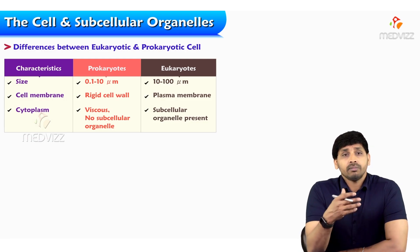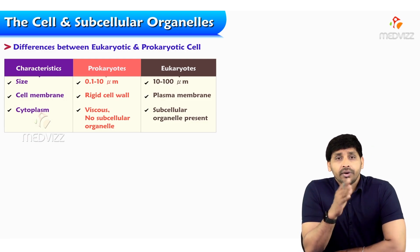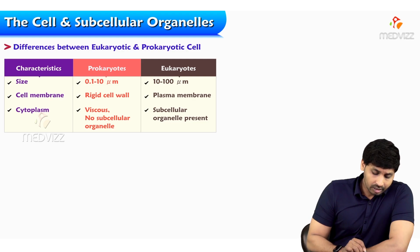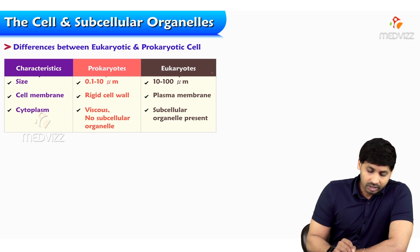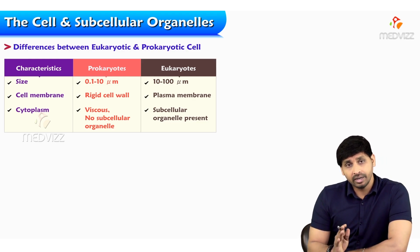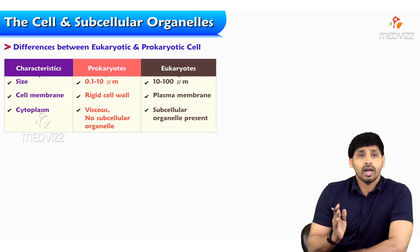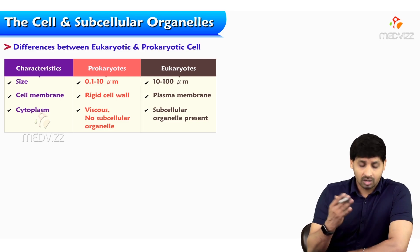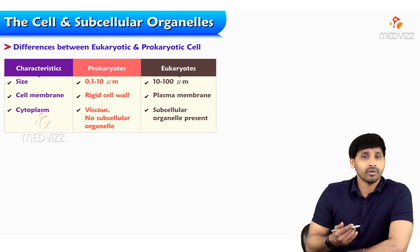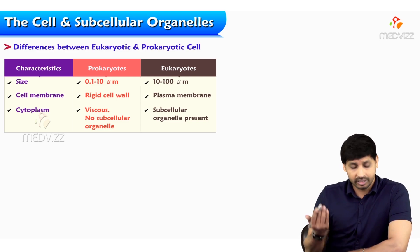Coming to the differences between eukaryotic and prokaryotic cells — in red color I have mentioned prokaryotes and in black color I have mentioned eukaryotes. The size of the cell also varies, as does the presence or absence of cell membrane and cytoplasm. All these things vary in prokaryotic and eukaryotic cells.